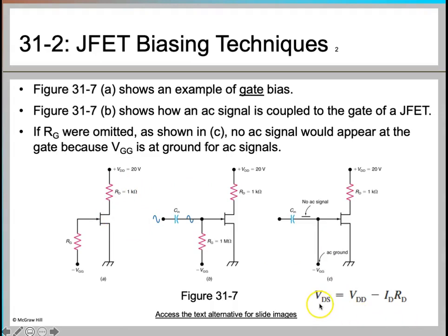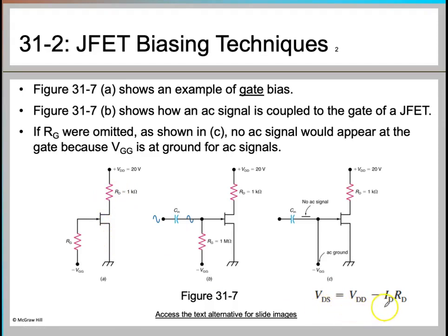Now, if you apply KVL, we can find the equation for VDS — the voltage across the drain and the source. The drain is here, the source is here, and the gate is here. We are measuring the voltage across these two terminals, which gives us VDS. The equation VDS equals VDD minus ID·RD is obtained by applying KVL in this loop.